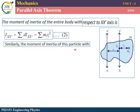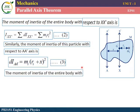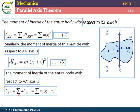The moment of inertia of the particle with respect to A-A prime: the distance between the particle and A-A prime equals ri plus x. So di-AA prime equals mass into distance squared equals mi into (ri plus x) squared. Equation number 3: the moment of inertia of the entire body with respect to A-A prime equals I-AA prime equals summation of di-AA prime, introducing the summation symbol over all particles.